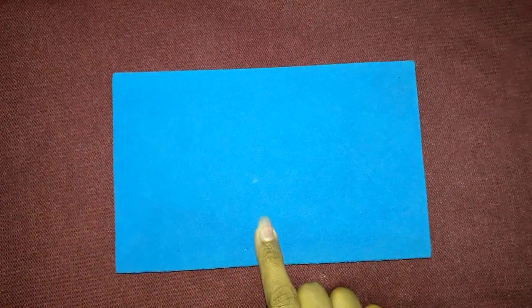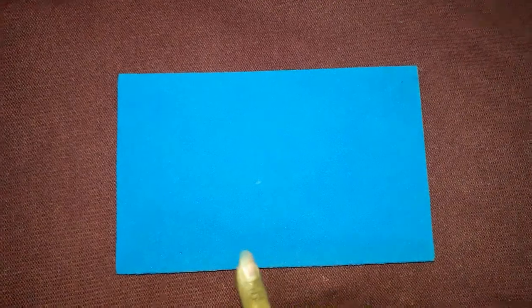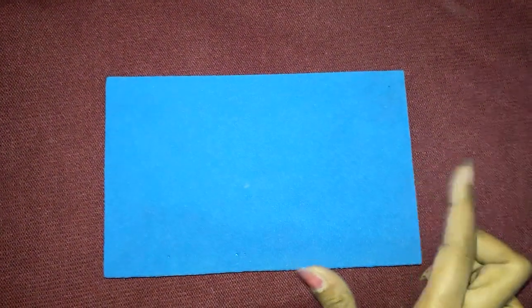Ab four sides hai rectangle mein. Also, it has four vertex. One, two, three, four. So four vertex, four sides. But this side and this side, both sides are not equal.